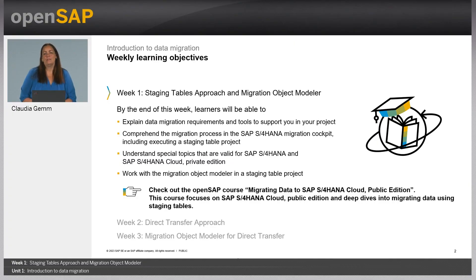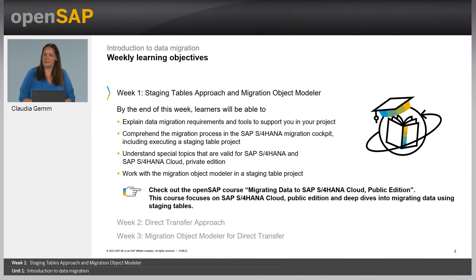To get a first overview, let's have a look at the learning objectives of this course. In the first week, we turn the focus on migration of data using the staging tables approach. In addition to that, we explain insights of using the migration object modeler. By end of this week, you will be able to explain what are the data migration requirements and what are the tools to support you. You will get an overview of the different steps during a migration process and how to use the SAP S/4HANA Migration Cockpit using the staging approach. Overall, you will get a better understanding on special topics that are valid for SAP S/4HANA and SAP S/4HANA Cloud Private Edition.